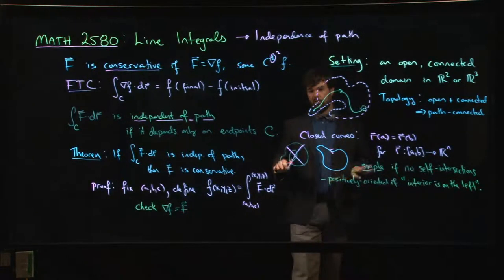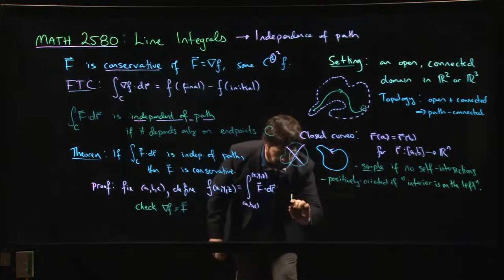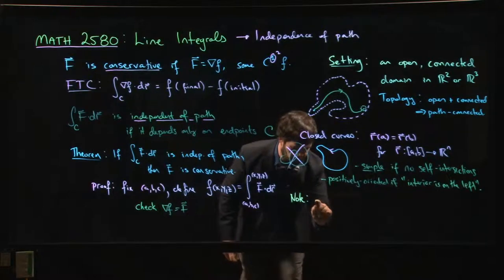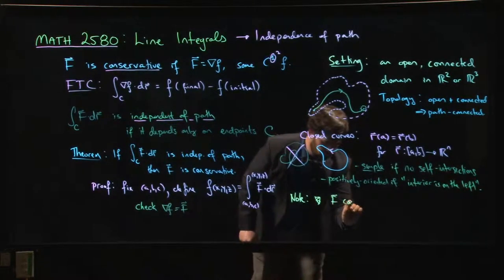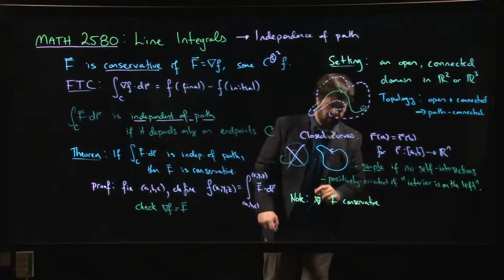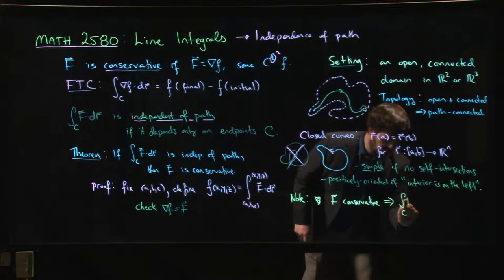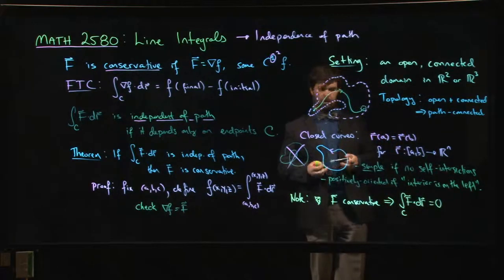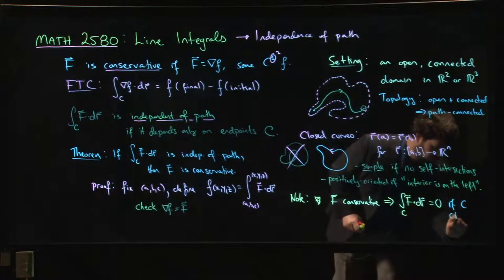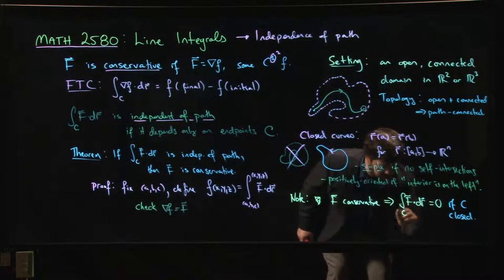We're moving on to Green's Theorem, which involves closed curves. One thing to note before we do: if F is conservative and therefore independent of path, then the integral around any closed curve C of F·dr will be zero. Line integrals around closed curves are called circulation.